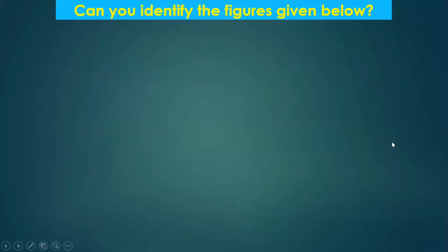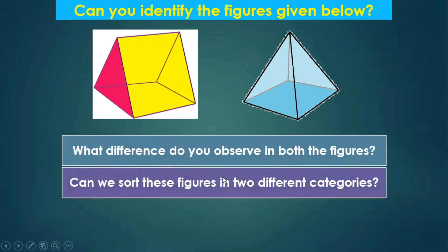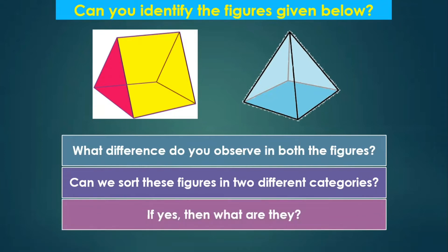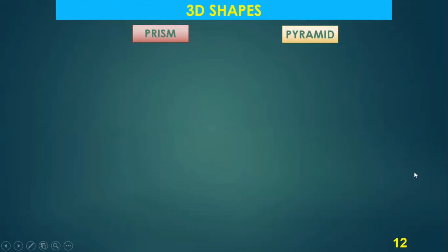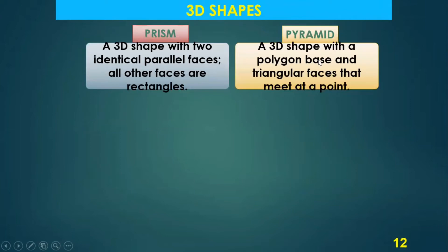Can you identify the figures given below? What difference do you observe in these figures? How are the tops and bottoms? Can we sort these figures into two different categories? The 3D shapes can be categorized into two different categories: prisms and pyramids. A prism is a 3D shape with two identical parallel faces where all other lateral faces are rectangles. A pyramid is a 3D shape with a polygon base — a polygon being a closed figure made up of line segments — and triangular faces that all meet at a point.